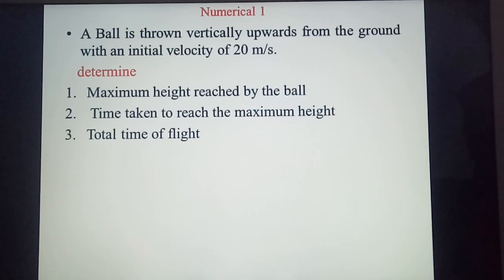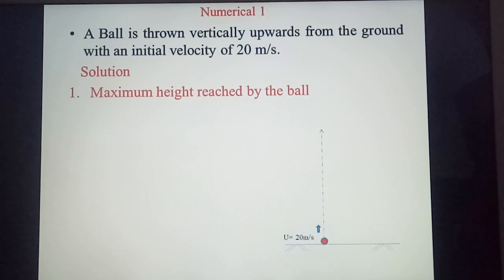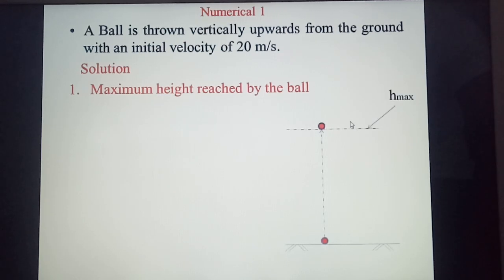Now we will move on to the first determination, that is to find the maximum height reached by the ball. So we will go through its trajectory where you can see the initial velocity of the ball is 20 meters per second. And then as it is thrown upward, it will move up until it reaches the maximum height. And for maximum height, velocity is equal to zero.